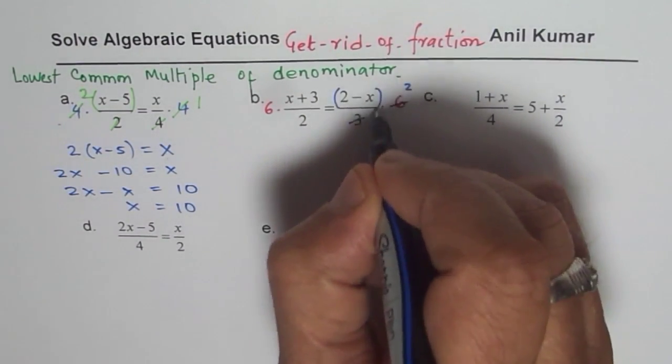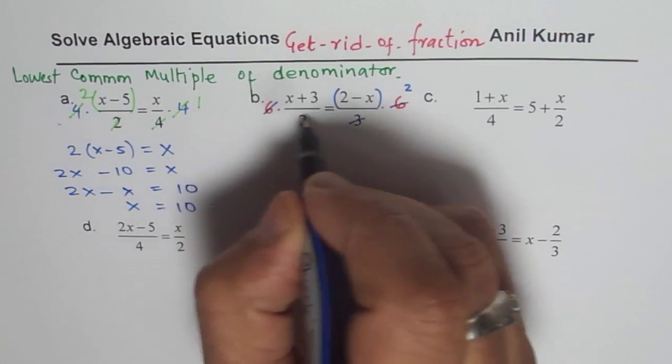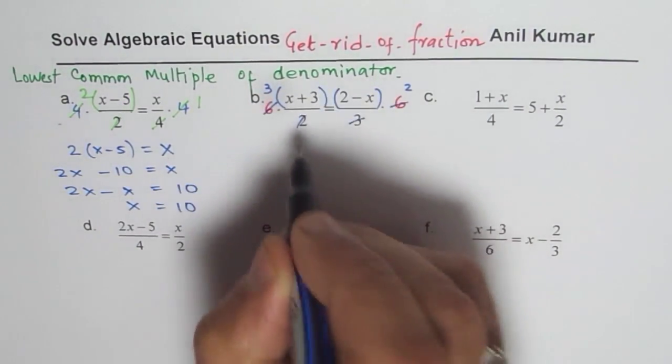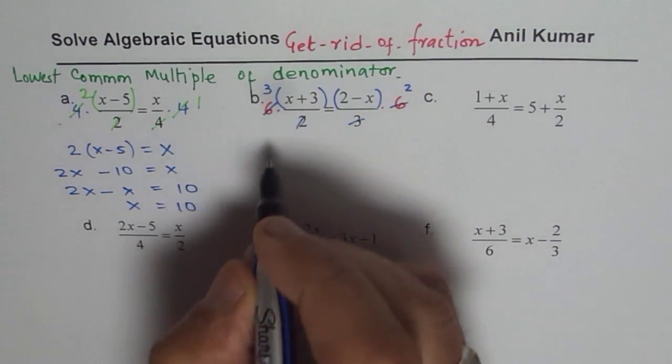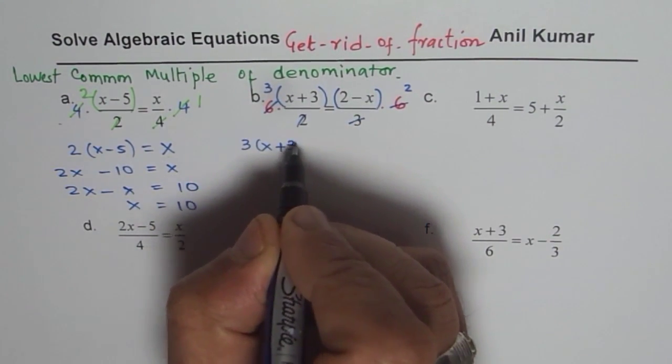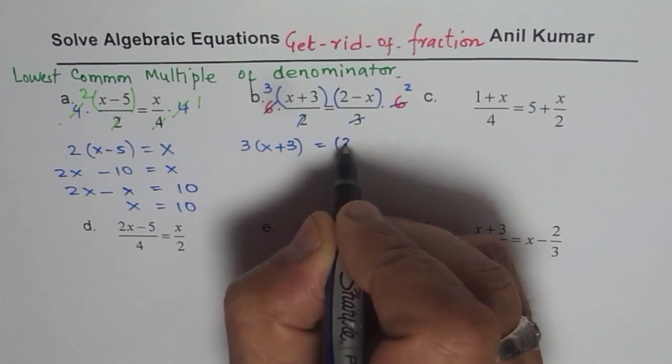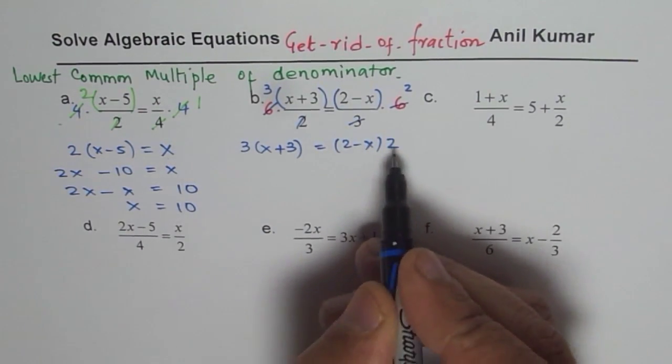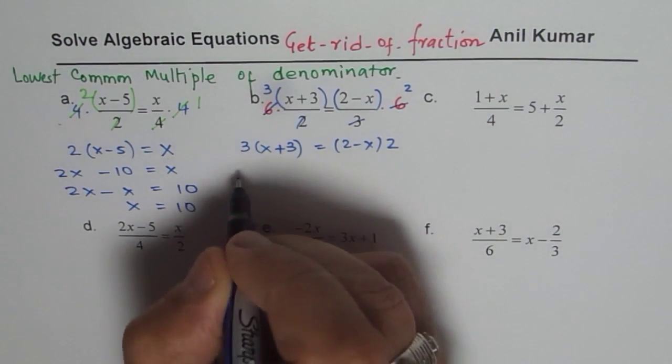So you can rewrite this as 3 times x plus 3 equals to 2 minus x times 2. Right? 2 could be written anywhere. Open the brackets. So you get 3x plus 9. You have to multiply with both. That is the distributive property.